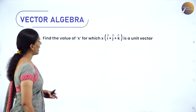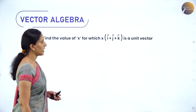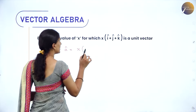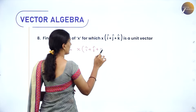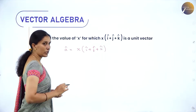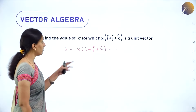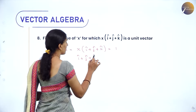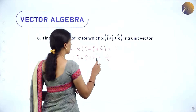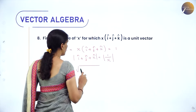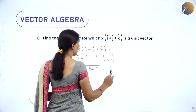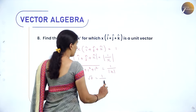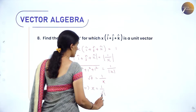Example: Find the value of x for which x(î+ĵ+k̂) is a unit vector. Since it is a unit vector, its magnitude is 1. So vector (î+ĵ+k̂) = (1/x), taking modulus on both sides: √(1²+1²+1²) = 1/|x|, giving √3 = 1/|x|. Therefore x = 1/√3.